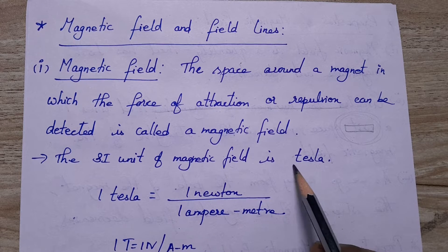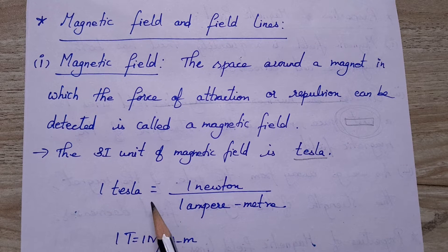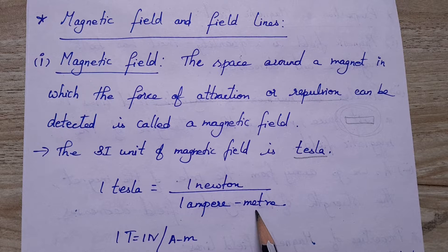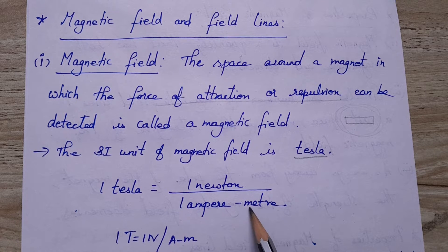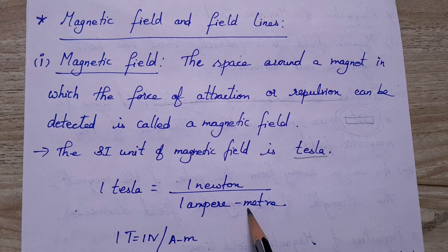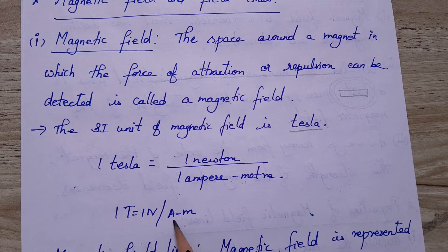The SI unit of the magnetic field is Tesla. What is meant by one Tesla? One Tesla means one Newton acting per one ampere meter — that means one Newton of force in one meter length of wire, where one ampere current is flowing. One Tesla equals one Newton per ampere meter.